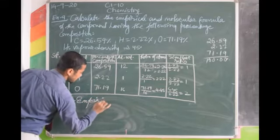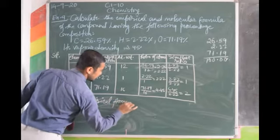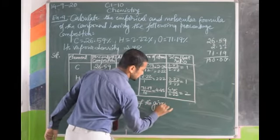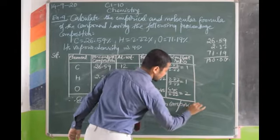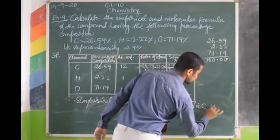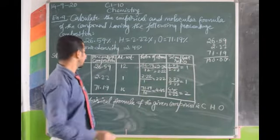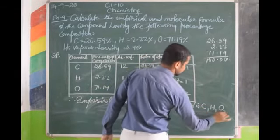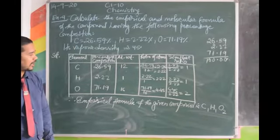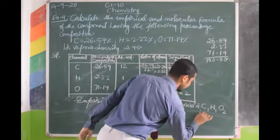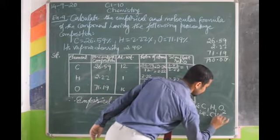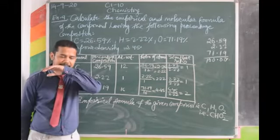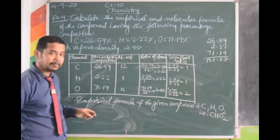Therefore the empirical formula of the given compound is C1H1O2. Ignoring the 1s, write CHO2. This is the empirical formula.